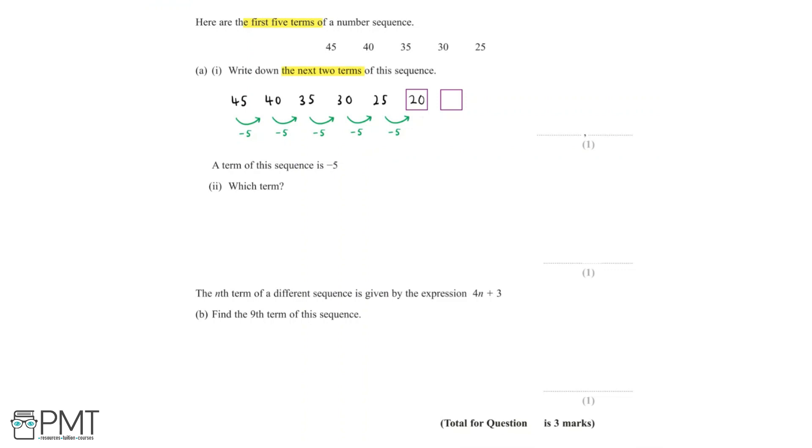And then to find the term after that, we take away 5 again. 20 take away 5 is equal to 15. And so we've therefore found that the next two terms of the sequence are 20 and 15.